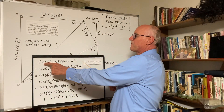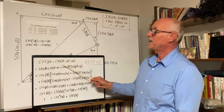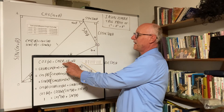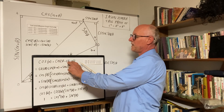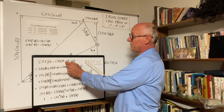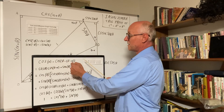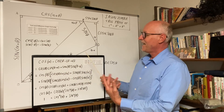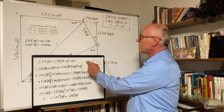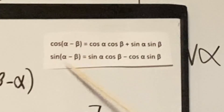We have cosine alpha equals cosine of beta minus (beta minus alpha). You can notice that the beta cancels beta, and the negative of a negative alpha becomes a positive alpha. So this is the same equality, and we are using the difference angle formulas for the cosine and the sine.